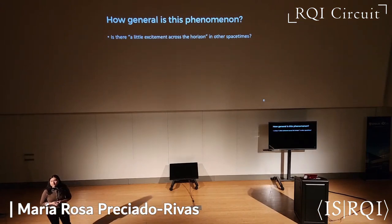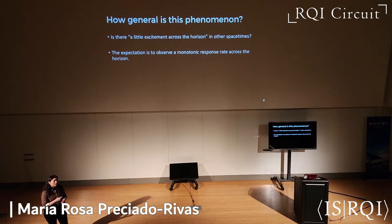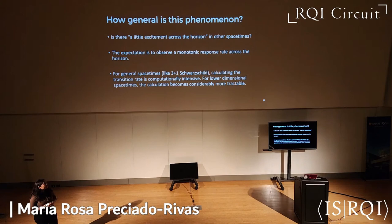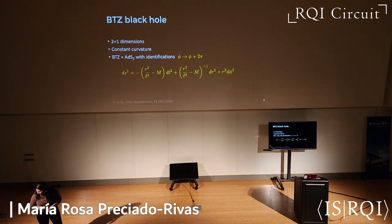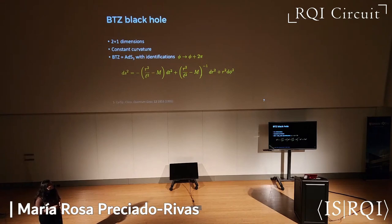My research question is how general this phenomenon can be. Can we find this excitation across the horizon in other spacetimes? For general spacetimes like the four-dimensional Schwarzschild black hole, this is very computationally intensive. However, if we look at lower dimensions, then this task becomes tractable. This is why we are looking at the BTZ black hole, which is a spacetime in only three dimensions, has constant curvature, and can be understood as ADS-3 spacetime with identifications in its angular part. It also has a fairly simple line element.